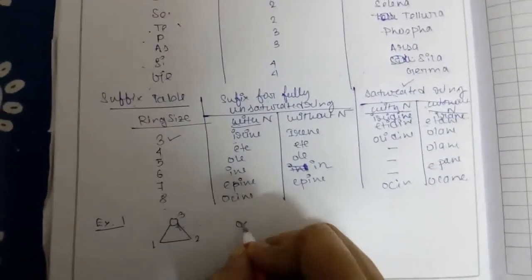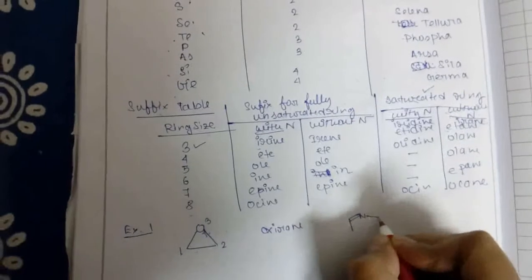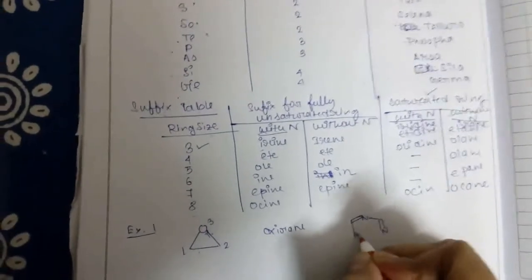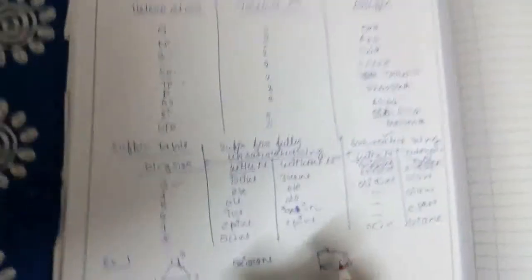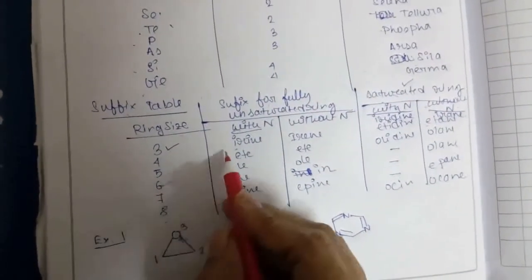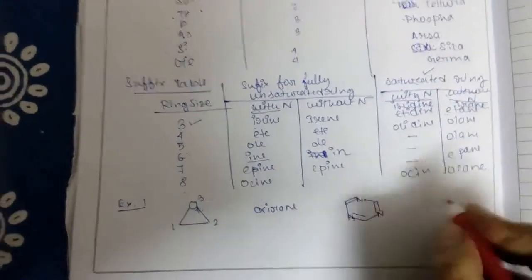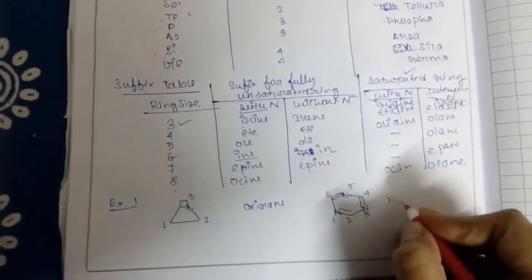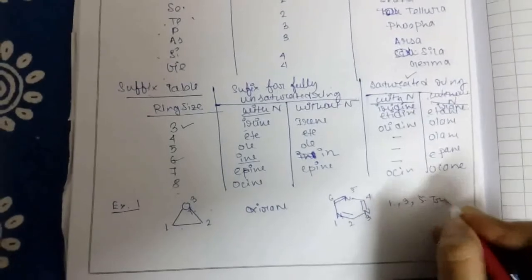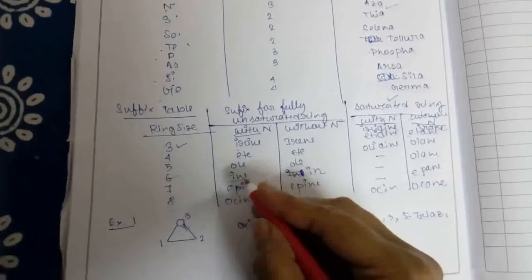Our second example: here 3 nitrogens are present, and the ring is fully unsaturated. It is a 6-membered ring - 1, 2, 3, 4, 5, 6. With nitrogen as a hetero atom, 6-membered with nitrogen and unsaturated, the suffix will be '-ine.' Here 3 nitrogens are present at the 1, 3, and 5 positions. The name will be 1,3,5-triazine.